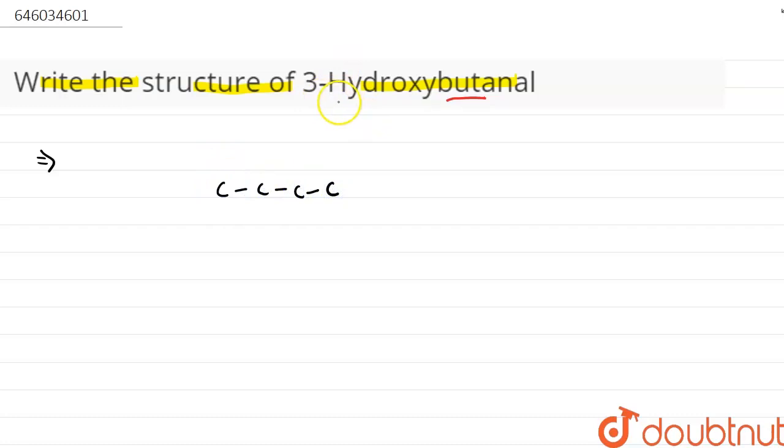And here we have given that there is a hydroxy group present at the position third. And this is a butanal. That is, here we have suffix 'al'. And here we will use the suffix 'al' for the aldehyde.